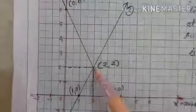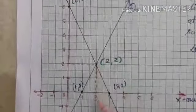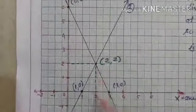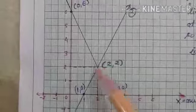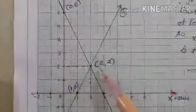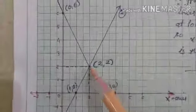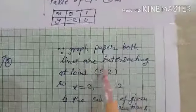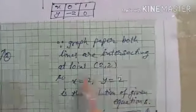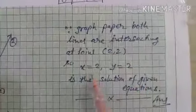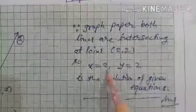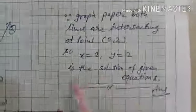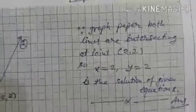This is the intersecting point of the two lines. Drawing perpendiculars from the intersection to the axes shows x equal to 2 and y equal to 2. So the intersecting point is (2, 2). Since both lines intersect at (2, 2) on the graph paper, x equal to 2 and y equal to 2 is the solution of the given equations. This is the answer.